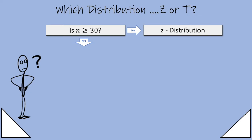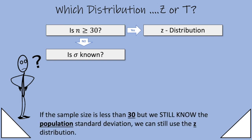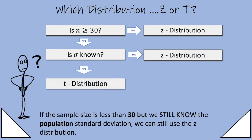If no, well, then you have another question to ask. And that is, is sigma known? Remember, sigma is the population standard deviation. If a sample size is less than 30 but we still know the population standard deviation, we can still use the Z distribution. So is sigma known? Yes, we're still in the Z distribution. Is sigma known? No, now we're in the T distribution.